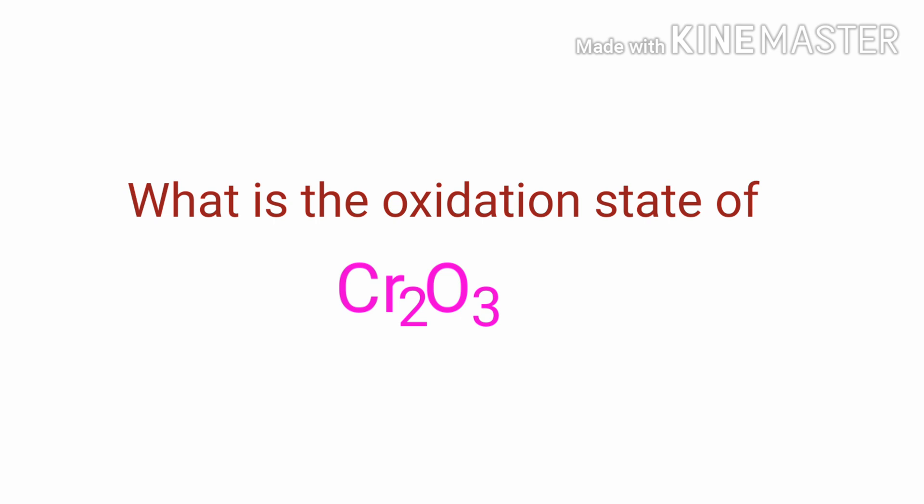What is the oxidation state of Chromic Oxide? Chromic Oxide is a neutral compound with overall oxidation number 0. Therefore, we know that the sum of oxidation numbers of the atoms is equal to 0.